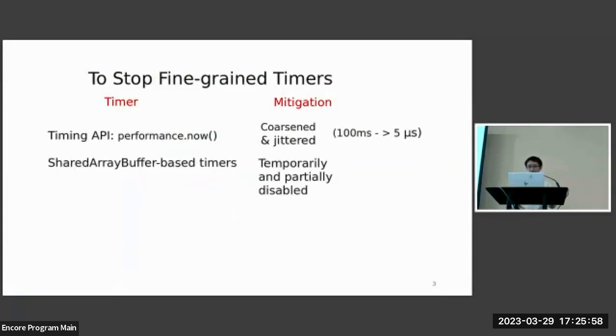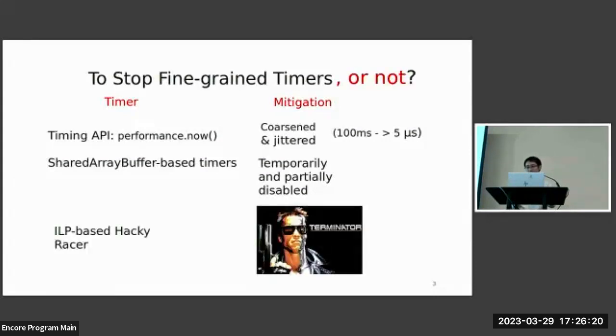Additionally, shared array buffer was once completely disabled and now still partially disabled because recent side channel attacks use it to build a timer. Other commercial browsers or cloud platforms such as Tor and CloudFlare Worker even have stricter policy to prevent attackers from obtaining any fine-grained timers. Unfortunately, our Hack Eraser overcomes all of those restrictions, raising the question of whether it is still worth sacrificing performance and compatibility for such mitigations.